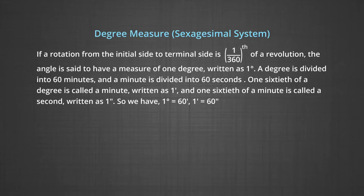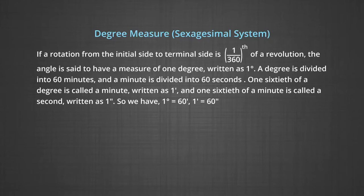Let us now study the degree measure. Another name for degree measure is sexagesimal system. If a rotation from the initial side to the terminal side is 1/360th of a revolution, the angle is said to have a measure of 1 degree, written as 1°. A degree is divided into 60 minutes and a minute is divided into 60 seconds. Just as in time, 1/60th of a degree is called a minute, written as 1′, and 1/60th of a minute is called a second, written as 1″.